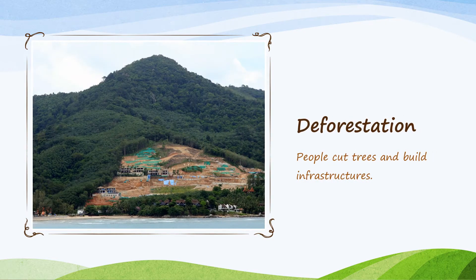Next picture — what can you see? You are correct. You can see that in some parts, the trees are already cut. So we call it deforestation.